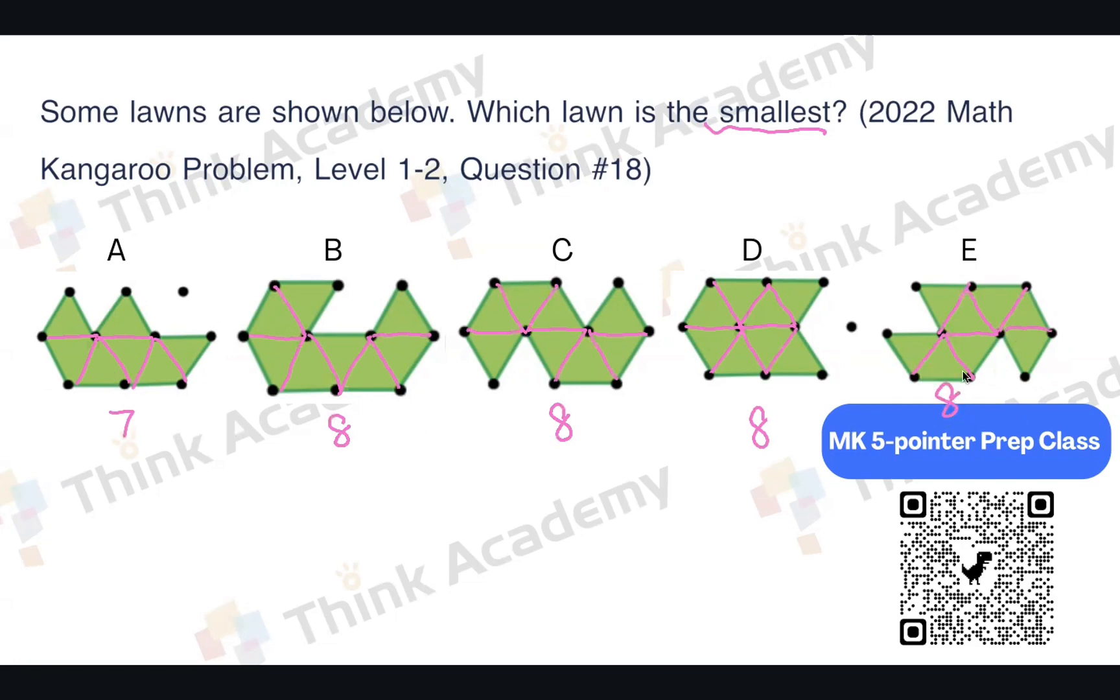So now if they have the different numbers of the units, can you tell me which one is the smallest? Definitely A, right? That's how we solve this question. And don't forget, if you want to see more, sign up our five-pointer prep classes.